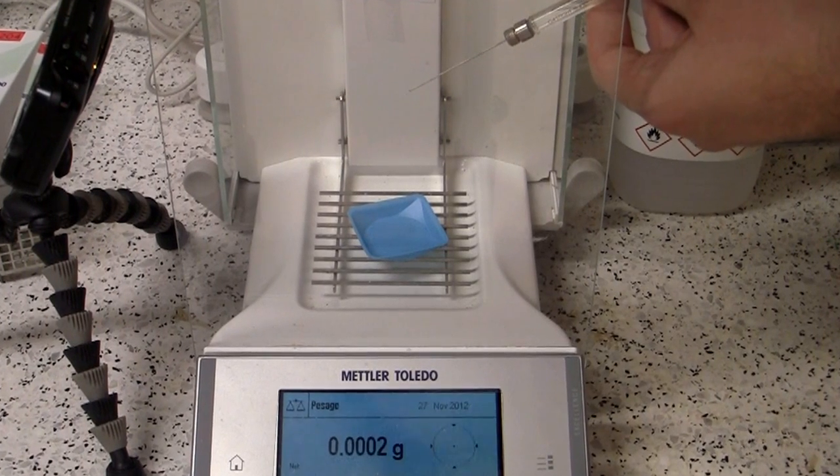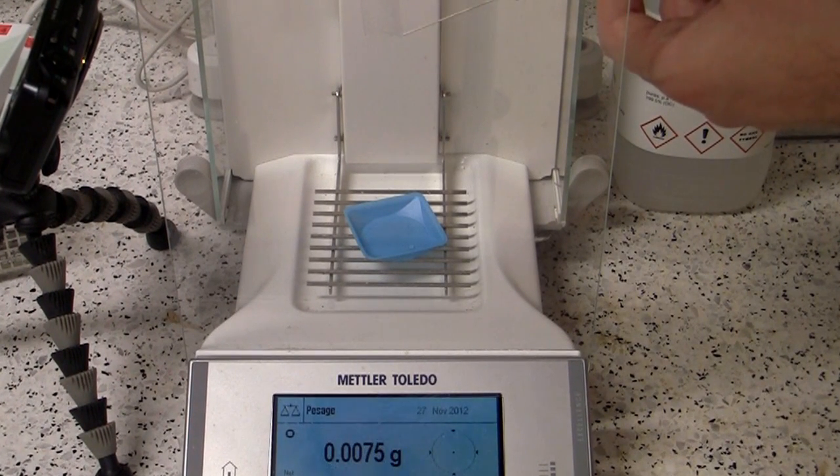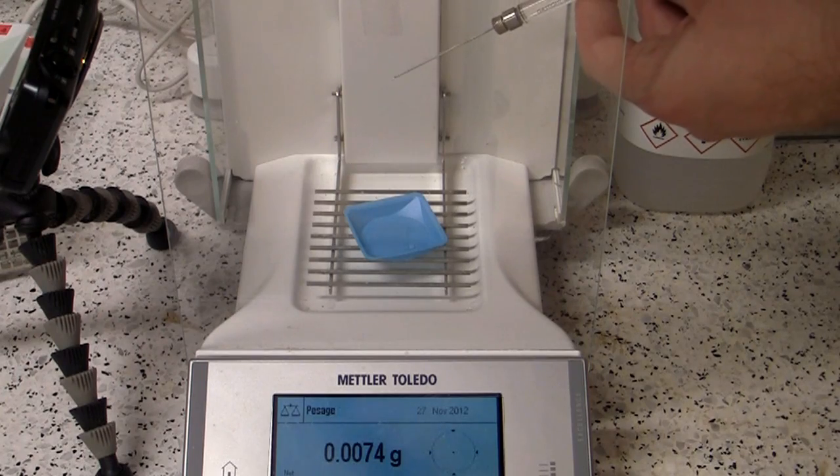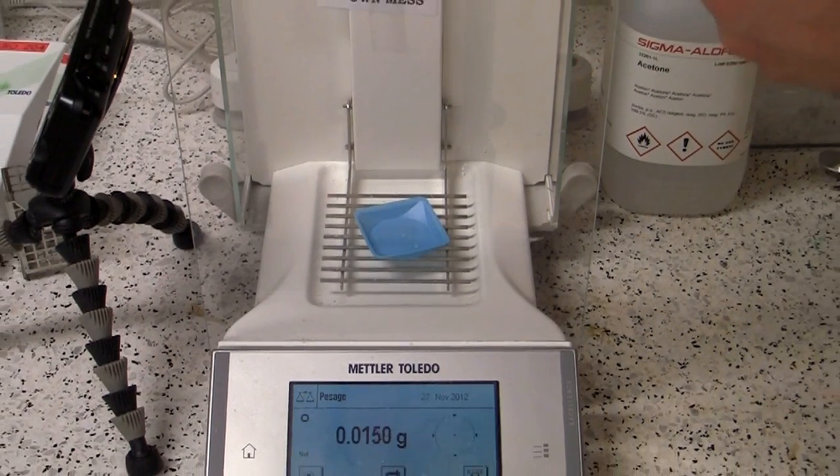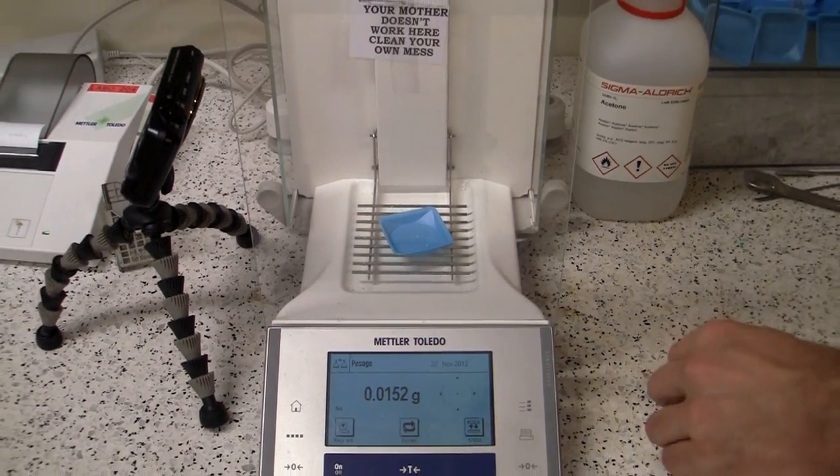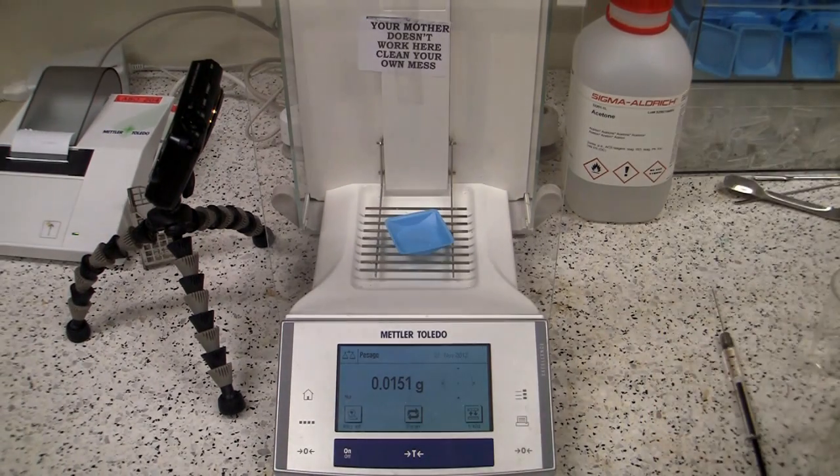Single drop of water. Boom! Comes in at about 7 to 8 milligrams. And another one. Boom! Slightly bigger that time. So our drops are coming in here at about 7.5 milligrams.